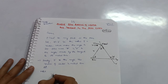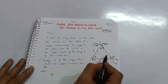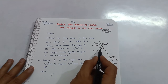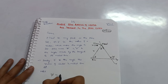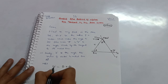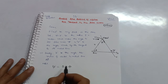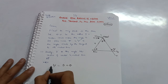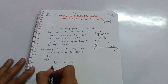First, you should know that ψ is an exterior angle, and the exterior angle is always equal to the sum of the two interior angles. So we can write ψ = θ + φ. This is the first equation. Now apply tan to both sides.